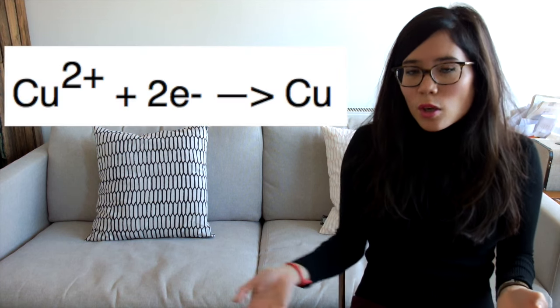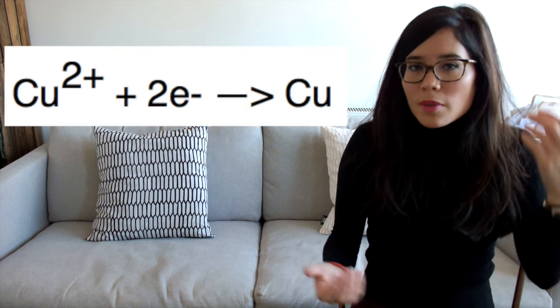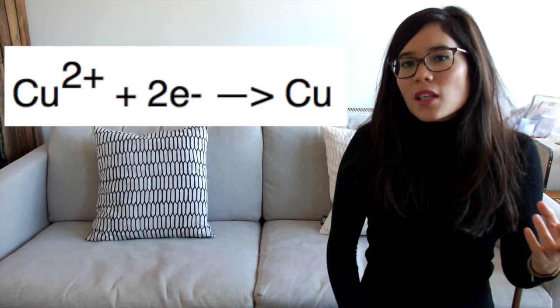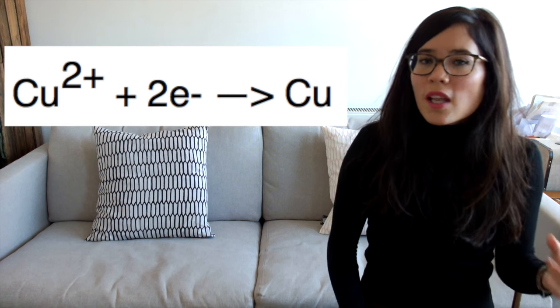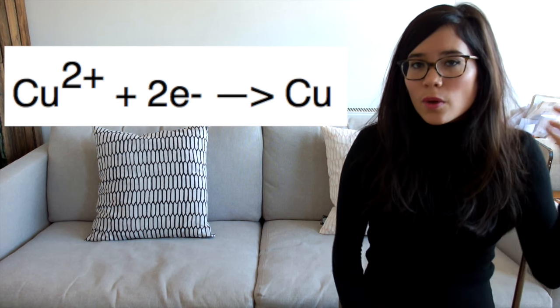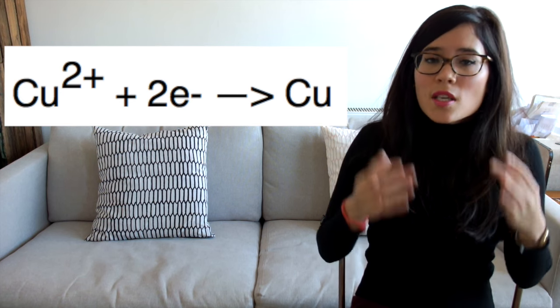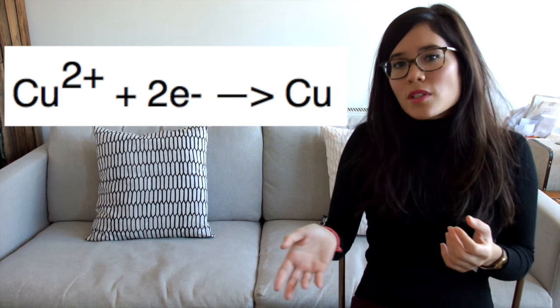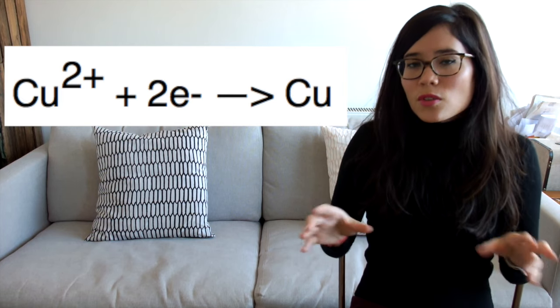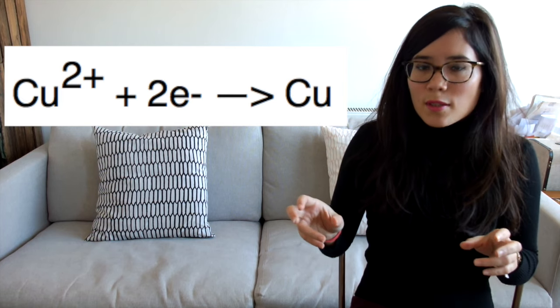Let's take another example: copper. Copper discharges because it's less reactive than hydrogen. So we're going to have Cu2+ making copper solid. Because it's a two plus ion, we're going to need two electrons in order to neutralize it. So our ionic equation is Cu2+ + 2e- → Cu(s). Make sure you write the state symbols.